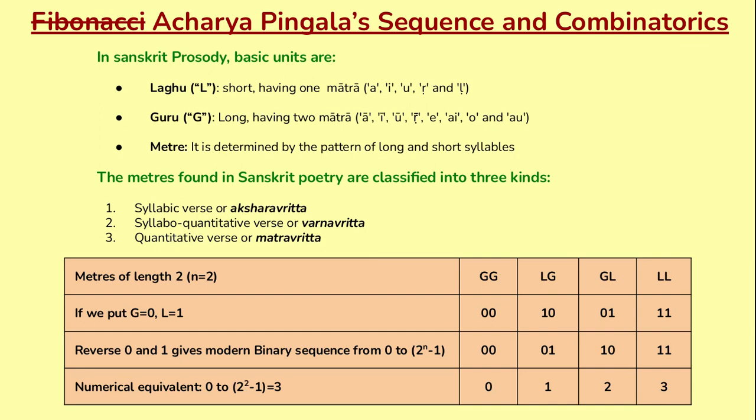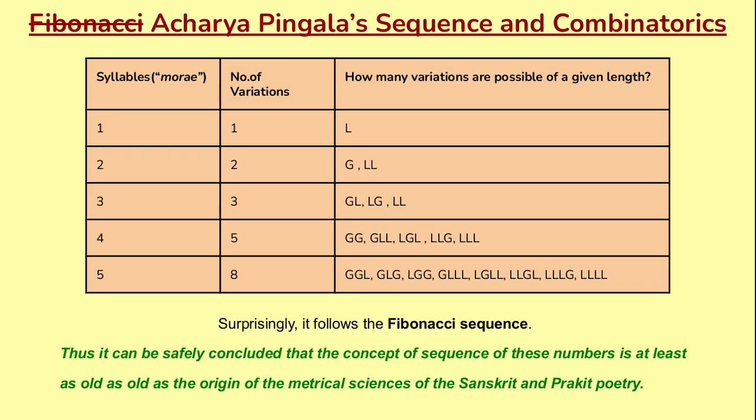In Sanskrit poetry, the basic units are laghu, having a single mora, and guru, having a double mora. A meter is determined by the pattern of short and long syllables, found in classical Sanskrit poetry, and is classified into three kinds: syllabic or Akshara Vritta, syllable-quantitative verse or Varna Vritta, and quantitative verse or Matra Vritta. The meter of type Varna Vritta with a single letter has two variations — G or L — and with two letters we have four variations. It clearly follows the Fibonacci series, so we can safely say that the sequence of these numbers appears in Sanskrit or Prakrit poetry.